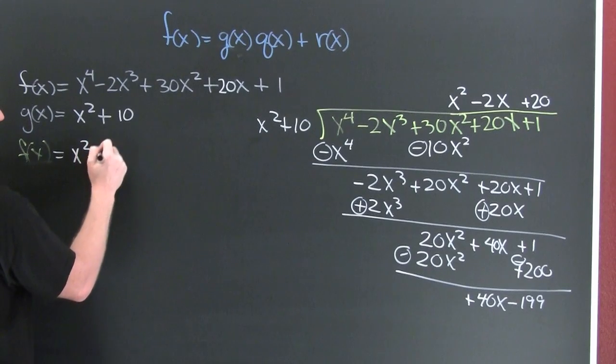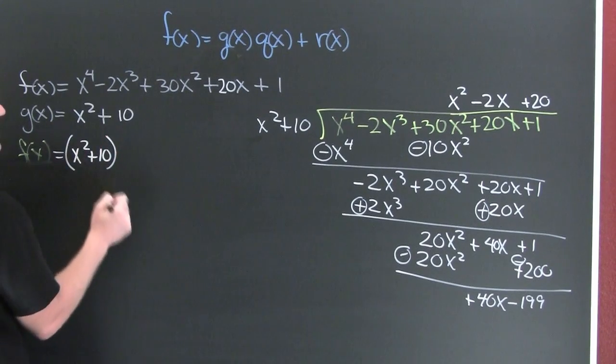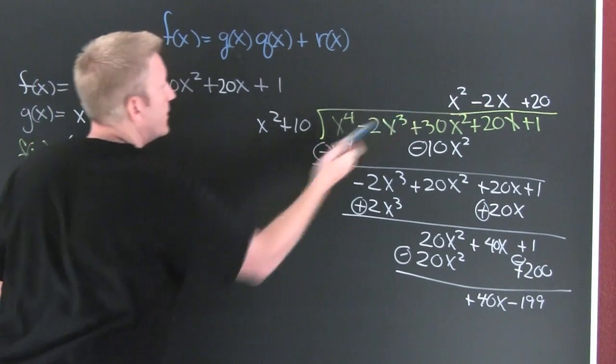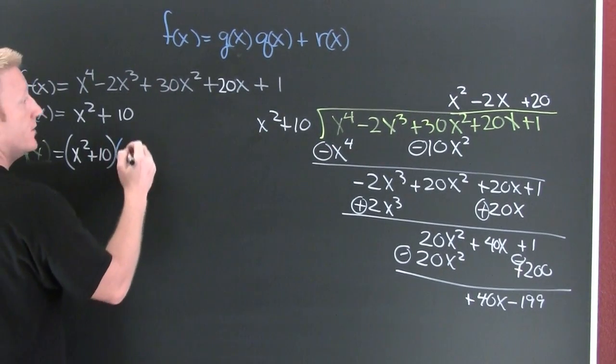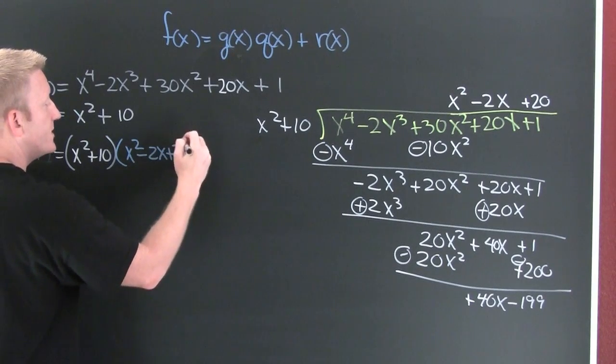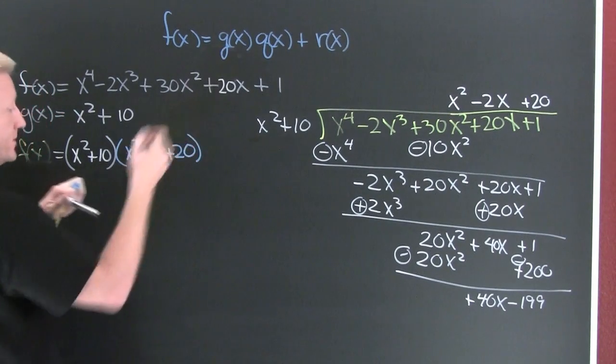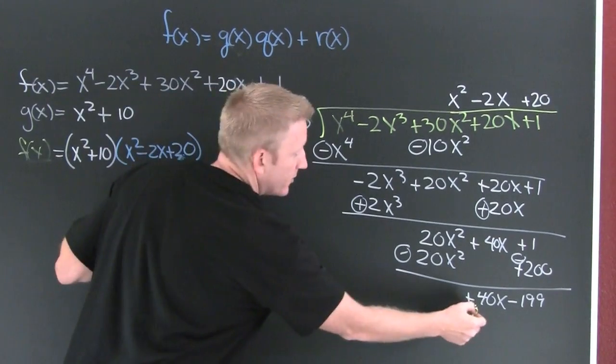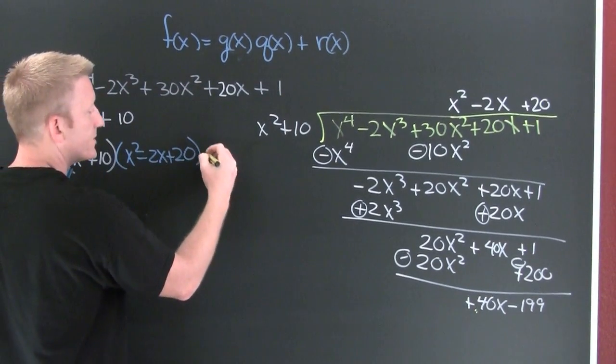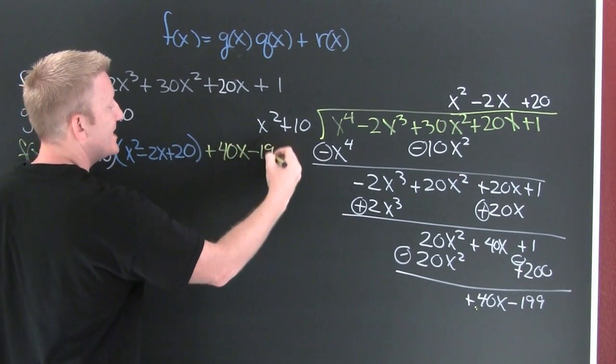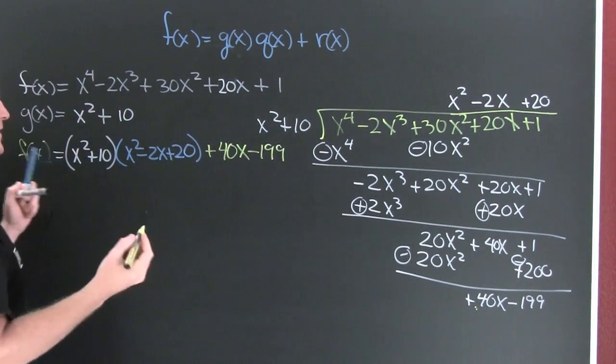x squared plus 10 times our quotient, that was this guy up here: x squared minus 2x plus 20, plus some remainder. And that would be this guy right down here: plus 40x minus 199.